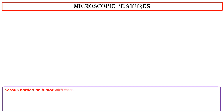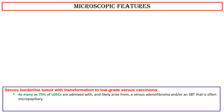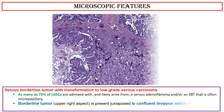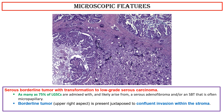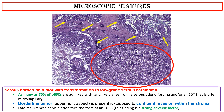Microscopic features of serous borderline tumor with transformation to low-grade serous carcinoma: As many as 75% of low-grade serous carcinomas are admixed with, and likely arise from, a serous adenofibroma and/or a serous borderline tumor that is often micropapillary. This photo shows a borderline tumor in the upper right aspect juxtaposed to confluent invasion within the stroma. Late recurrences of serous borderline tumors often take the form of a low-grade serous carcinoma. This finding is a strong adverse prognostic factor.